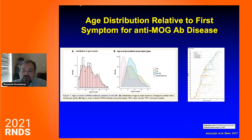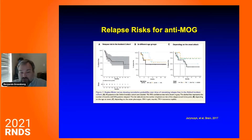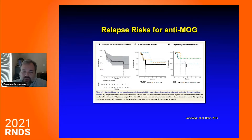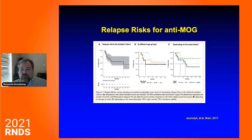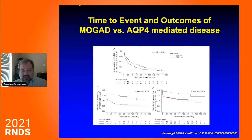We saw that you could have relapses over time — about half of individuals would have a relapse, but these relapses were spread out over time. Clinically, a lot of these patients looked like what we see in neuromyelitis optica — they had optic neuritis and transverse myelitis and relapses over time — but there were some distinct differences.